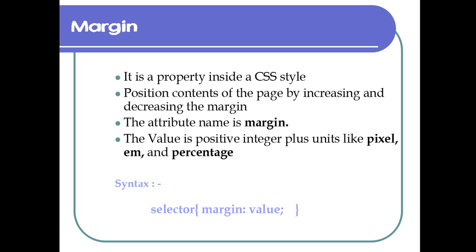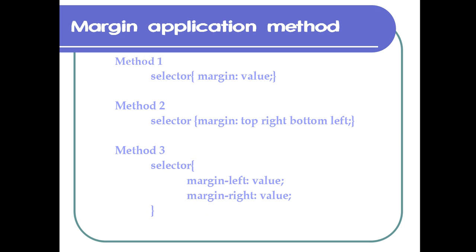You have your unique selection model. Implicit technique is to apply top, right, bottom and left. And explicitly: margin left, margin right, margin top, margin bottom.